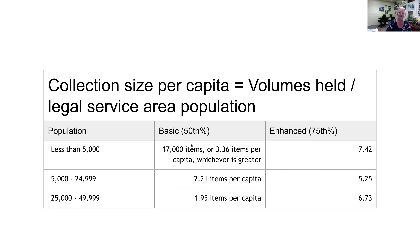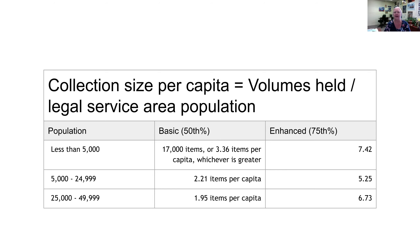A question was raised: wouldn't 17,000 always be the higher number for communities under 5,000? Not necessarily — it depends on if you've weeded heavily or if your school library closed and you added everything in. And remember, if you've got a small library and you're following the 17,000-item standard but don't have the room, you set your own standard. These are guidelines, not mandates.